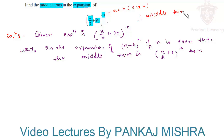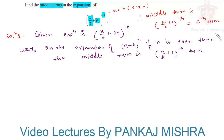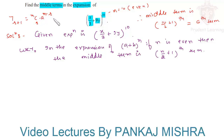The middle term is the (10/2 + 1)th term, which equals the 6th term. We know that the general term of an expansion is given by T(r+1) = nCr · a^(n−r) · b^r.